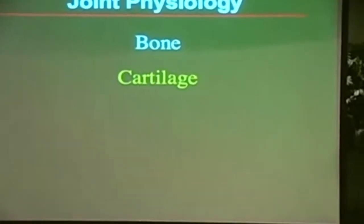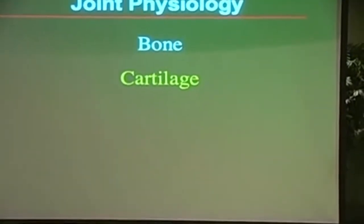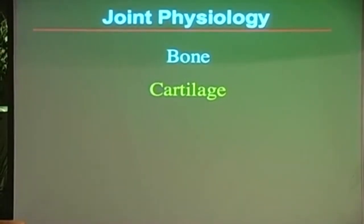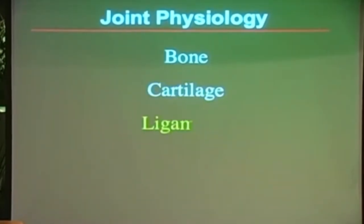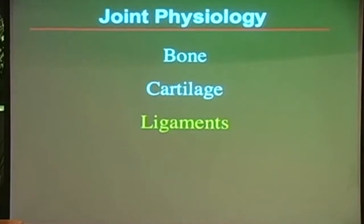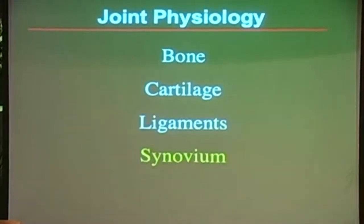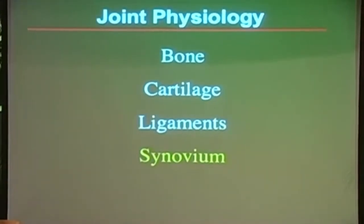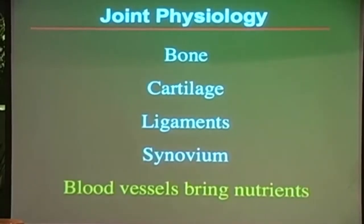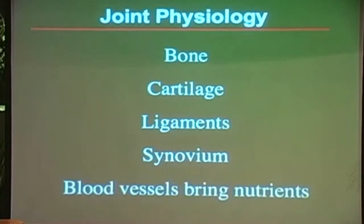To review: fortunately it's not bone on bone — there's cartilage, a tough fibrous sponge material. Then there are ligaments which keep the knee from moving too much, synovium that brings the nutrition, and blood vessels that bring the nutrition to the synovium.